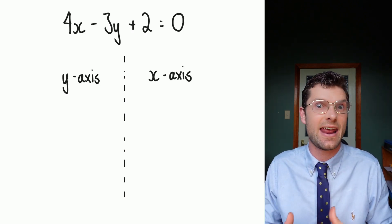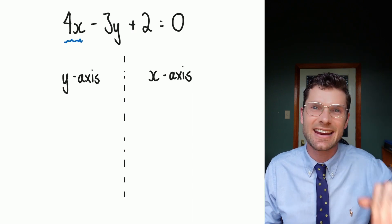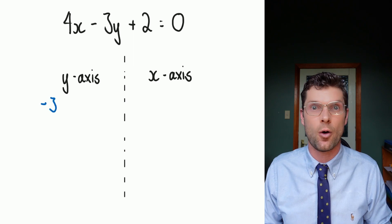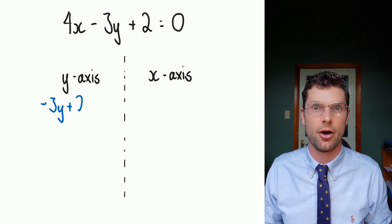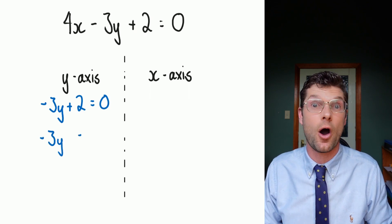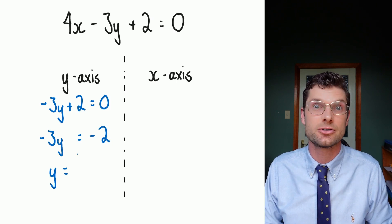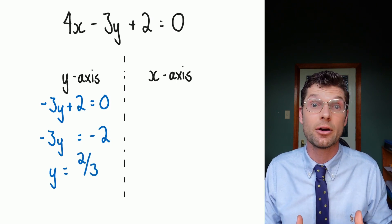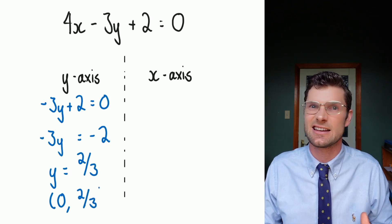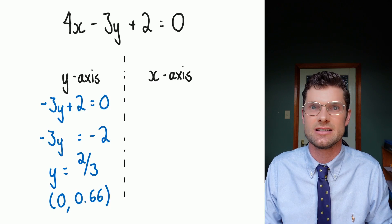So for the y-axis, I know that x is equal to zero. I already know that 4 times 0 is 0, so I'm just going to get rid of that x straight away. Now I'm just left with negative 3y plus 2 is equal to 0. To get y by itself, I've got to minus 2 to the other side, negative 3y is equal to negative 2. Divide both sides by negative 3, y is equal to 2 over 3. Remembering that those negatives do cancel out. 2 over 3 is the same as 0.66 repeater, so the y-intercept is at 0 comma 0.66.